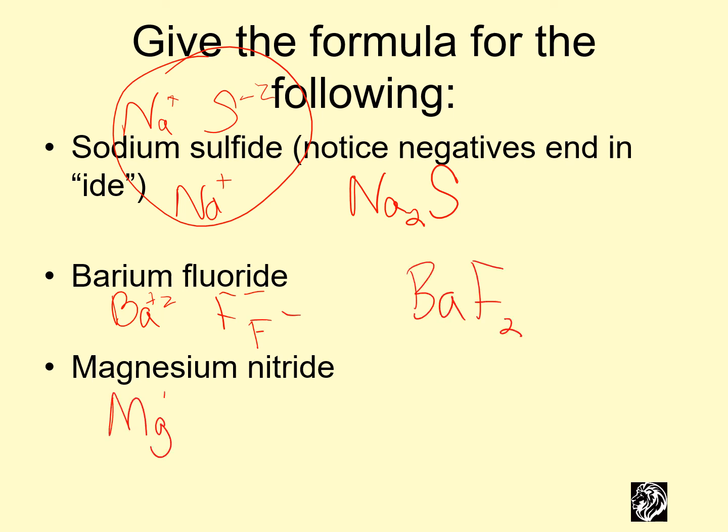Magnesium is a metal. It's in the +2 column. Nitride is a nonmetal in the -3 column. We'll need some more of this. That's only +4. That's -6. That's +6. Mg3N2.